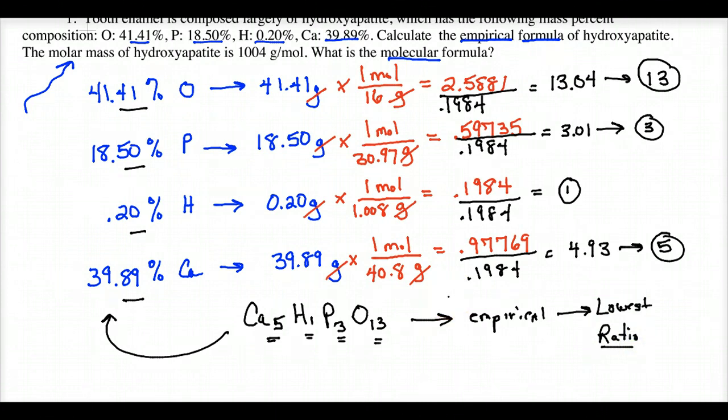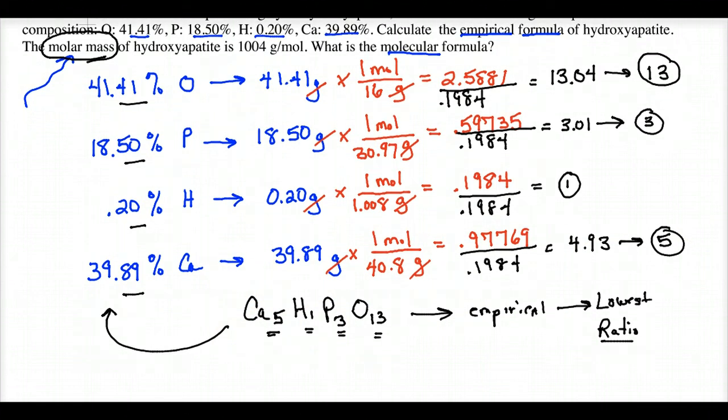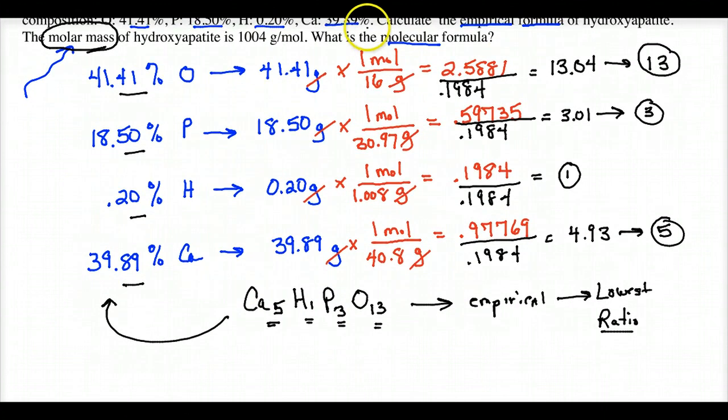Now, from another experiment, which we will be doing in the laboratory this year, we can find the actual molecular mass, the mass per one mole. See, all we have here is the ratio of different types of atoms in the compound. But we do not have the actual ratio that could exist in nature called the molecular formula. So we need another experiment. And this other experiment gives us the molecular mass to be 1004. Now, how do we come up with the molecular formula?